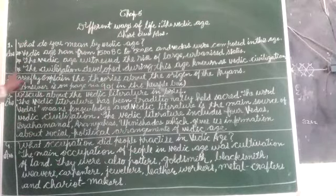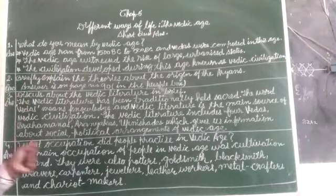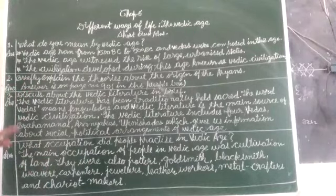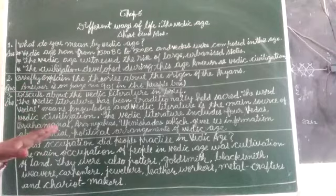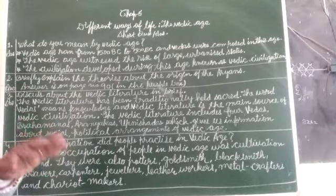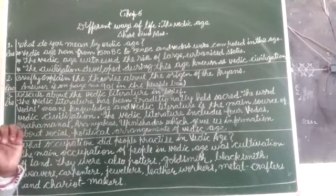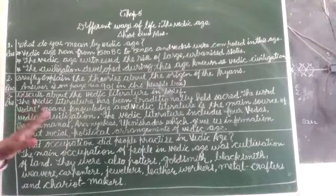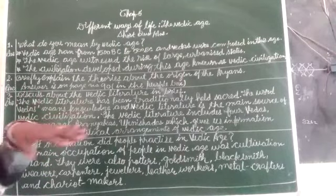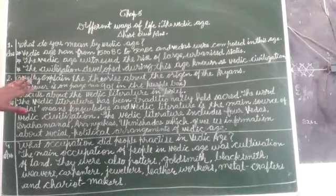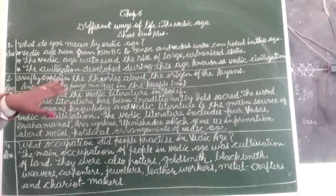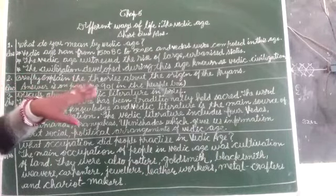First question: What do you mean by Vedic Age? Answer: The Vedic Age ranges from 1500 BC to 500 BC, and the Vedas were composed in this age. The Vedic Age witnessed the rise of large, organized states.